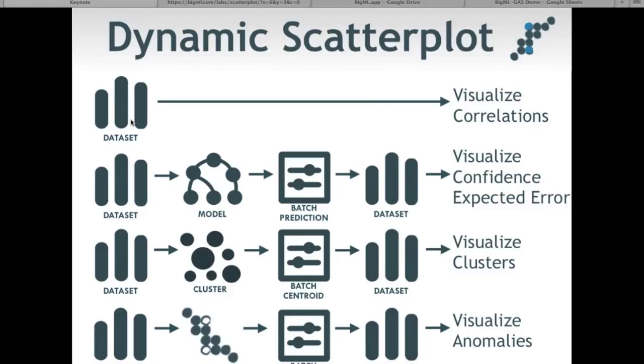Similarly for clusters, you can do a batch centroid output as a dataset and then visualize clusters, seeing in two dimensions which features clump data together. For the anomaly detector, you can do a batch anomaly score output into a dataset and visualize anomalies as well. Let's look at an example of visualizing anomalies using the Pima Indians diabetes dataset from the UCI repository.